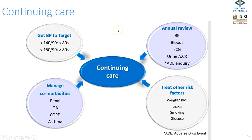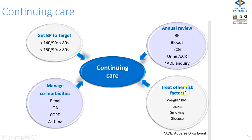Once you diagnose the patient and institute treatment, you then have to manage and monitor them. You should have definite targets and the patient should know about this — give them a cooperation card with their target blood pressure, BMI, and so on. They should have an annual review covering blood pressure, bloods, ECG, urinary ACR, and an adverse drug event inquiry. Manage all comorbidities and treat other risk factors.